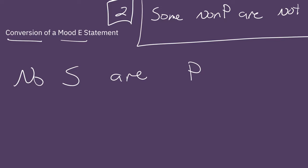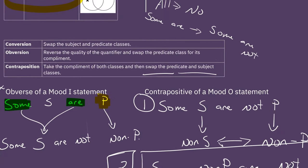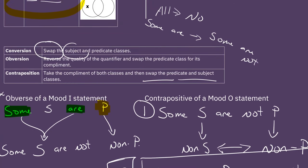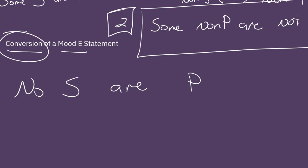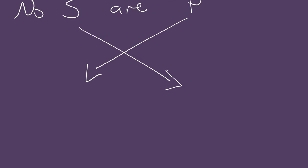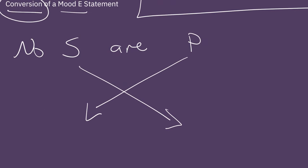Now what do we do when we do a conversion? This is actually pretty simple. All we do, according to our chart, is we swap the subject and the predicate classes. So we're going to move this over here and move that over here. And then we can write as our final statement, no P are S. And there you go. Here's our conversion.